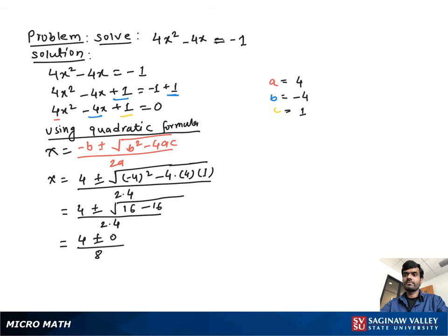Therefore, x = 4/8. Dividing numerator and denominator by 4, we get x = 1/2. This is our final answer.